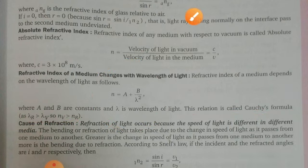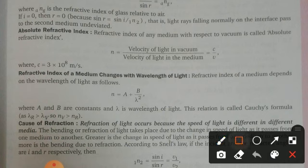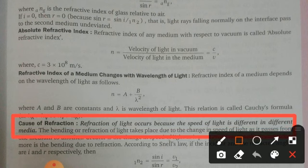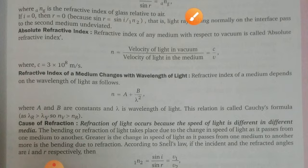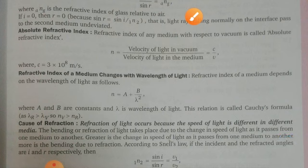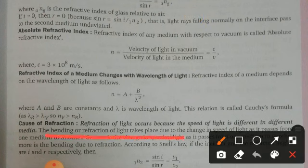What is the cause of refraction? Refraction of light occurs because the speed of light is different in different media. If a light ray travels in air and in glass, the speed of light in both cases is different. The bending of light — refraction — takes place due to the change in the speed of light as it passes from one medium to another.